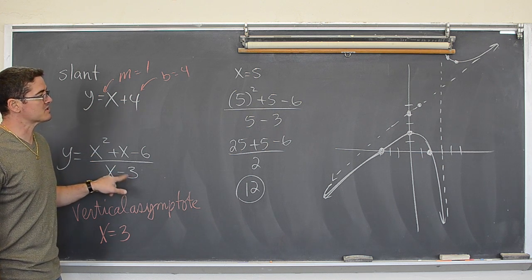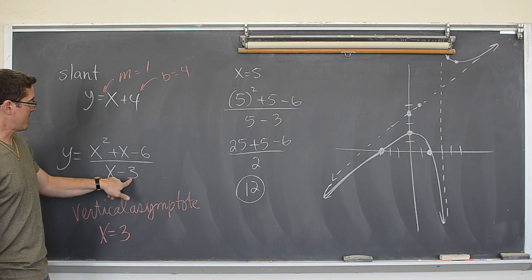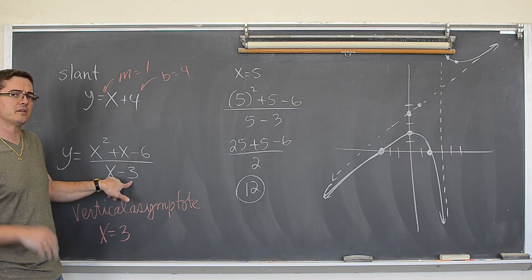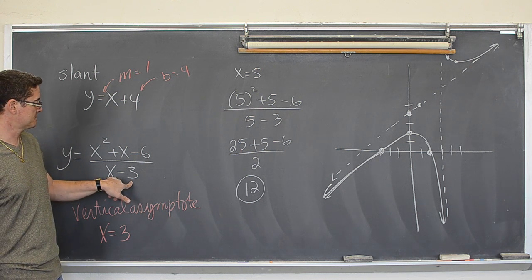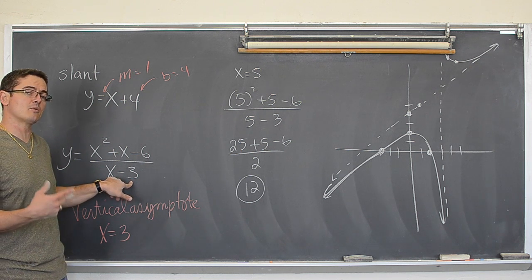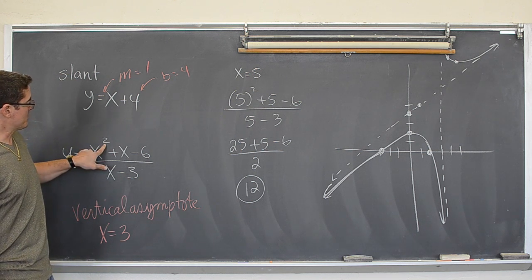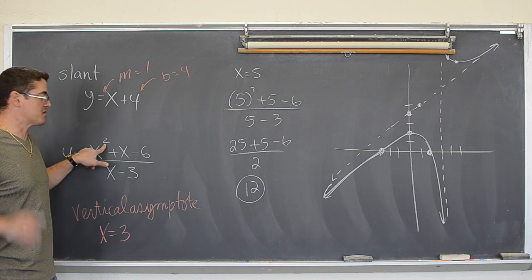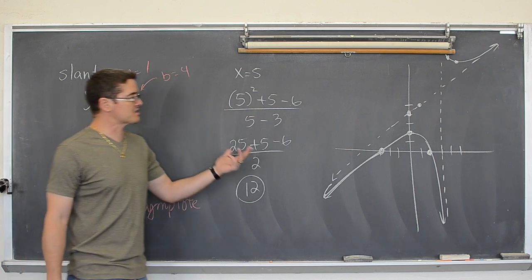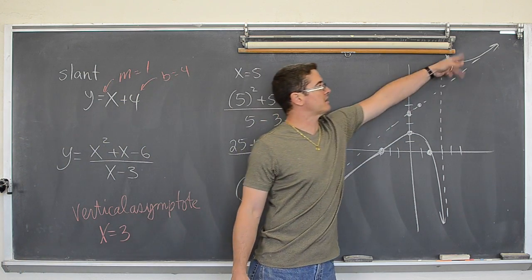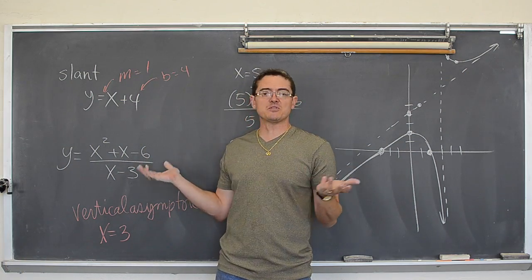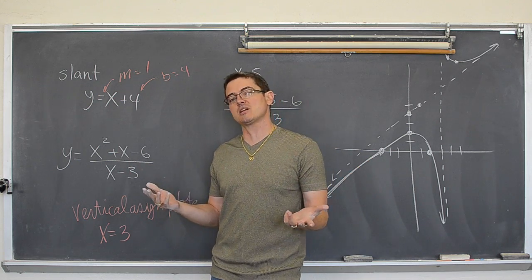If your top degree is larger by one, you do have a slant asymptote. You find it with long division. Vertical asymptotes come usually from when the denominator is equal to zero. If the denominator is equal to zero, remember sometimes that could give you a hole. The top degree was larger, so there was no horizontal asymptote. And, I found the x-intercepts and the y-intercepts and plotted a couple of extra points.